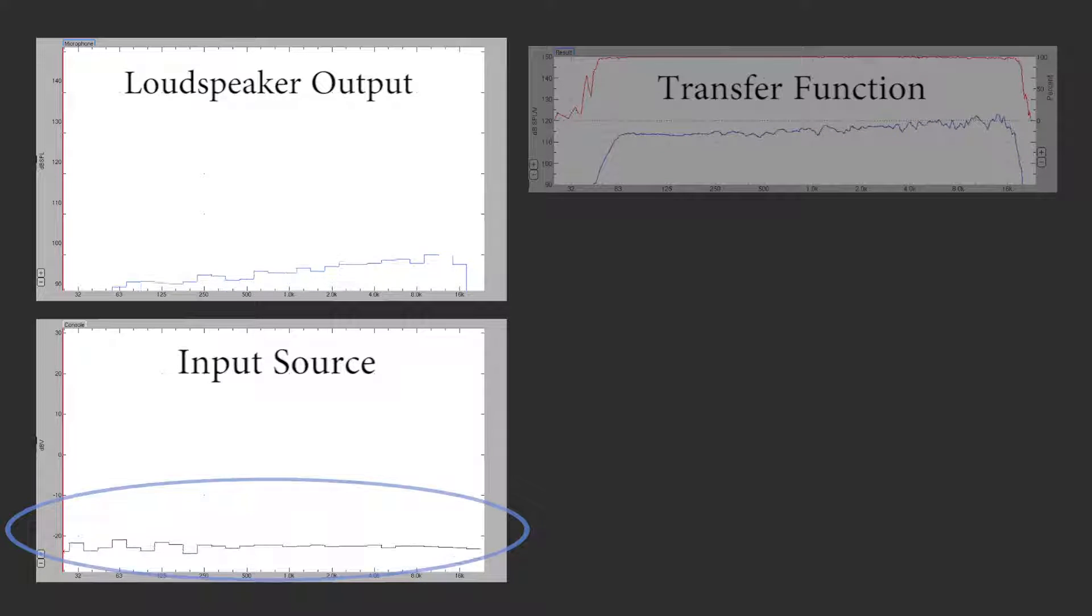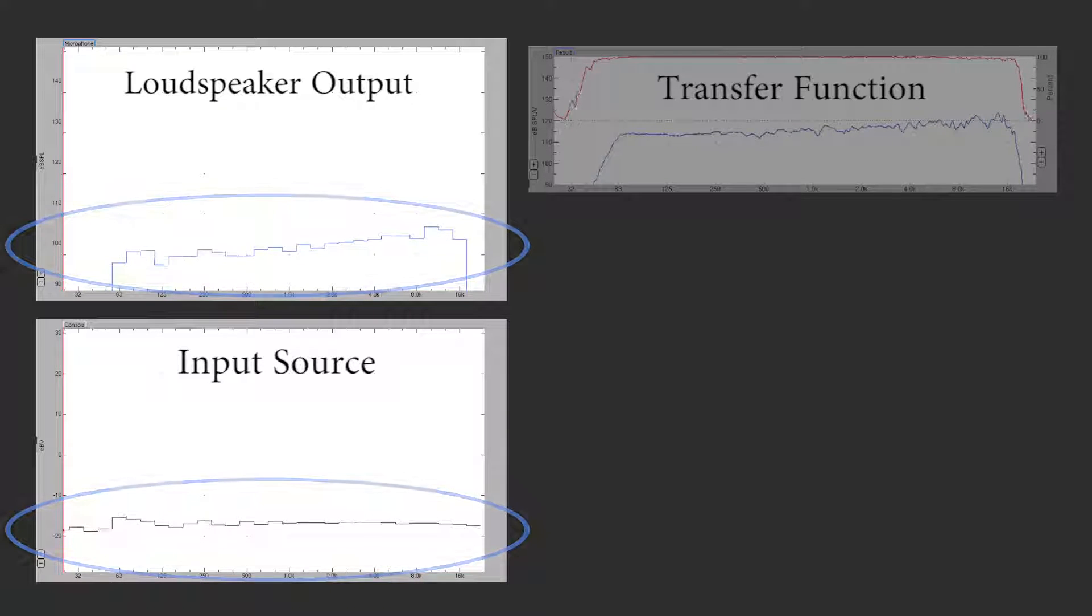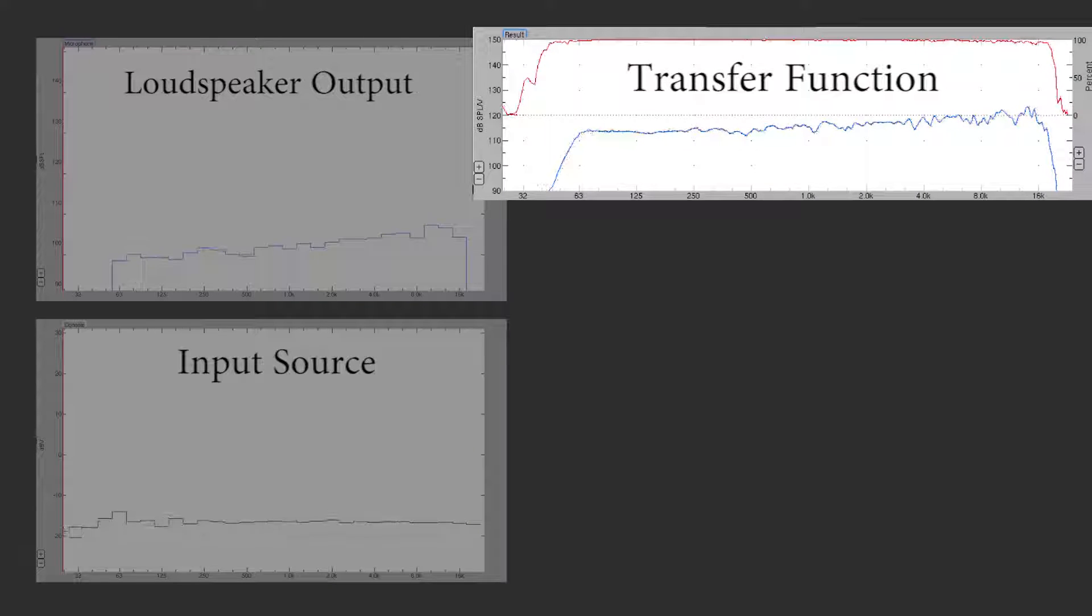When the input level is increased and the output level increases proportionally, the transfer function remains stable, indicating the ratio between these two signals remains constant and the loudspeaker is within its linear operating range. This trace is stored for reference.